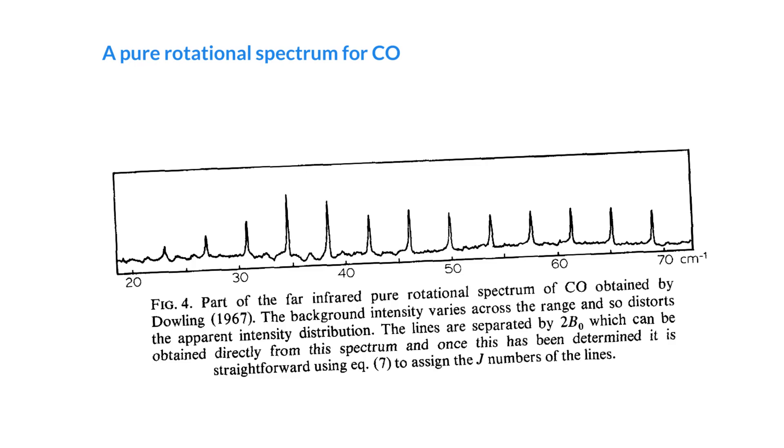Here's a figure from their paper. This is a pure rotational spectrum for carbon monoxide. These are in wave number units. We can see a series of peaks that look like a comb, a very jagged comb. They have a fairly constant spacing apart. That means this is super easy to identify as a rotational spectrum.